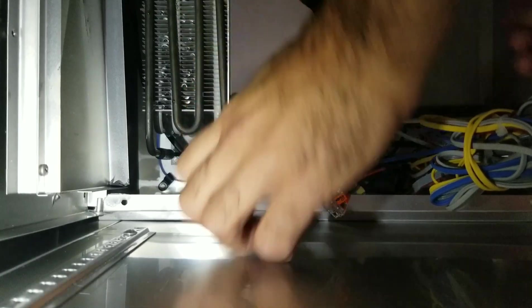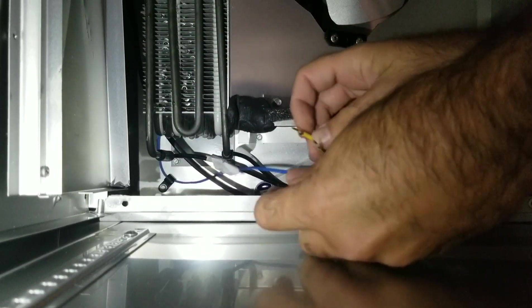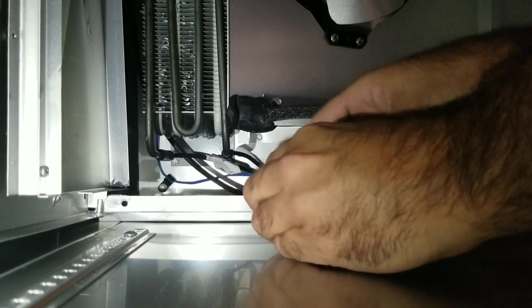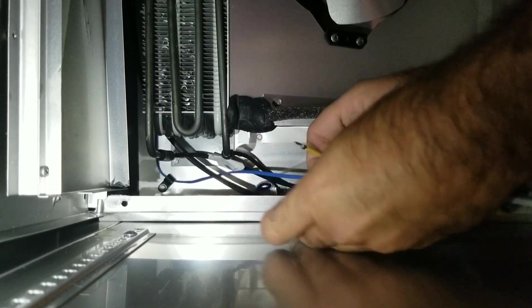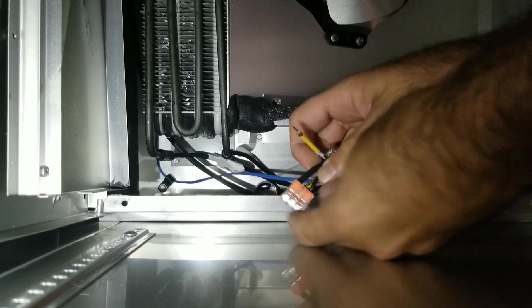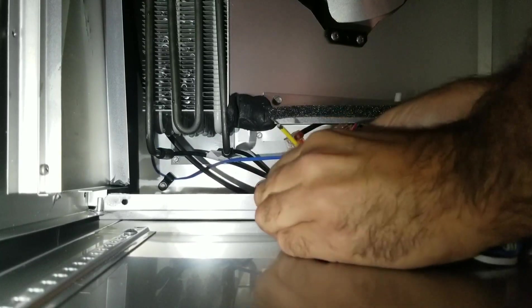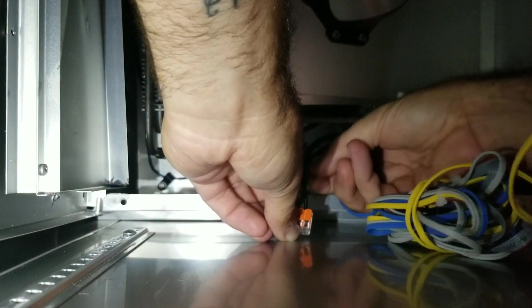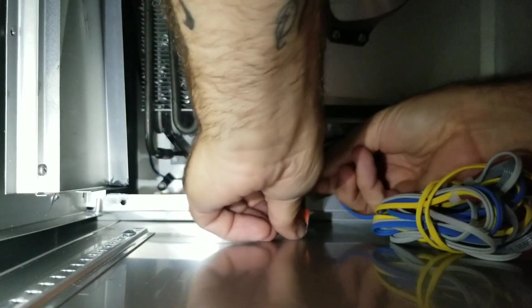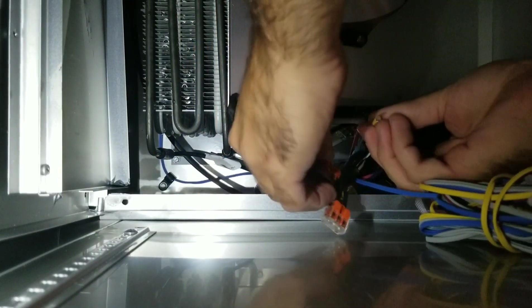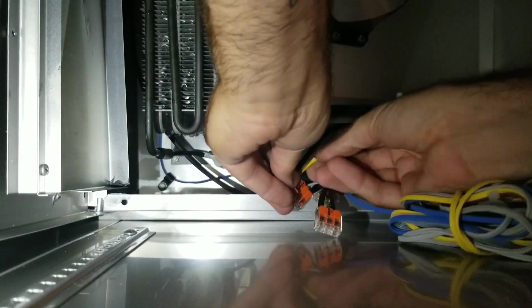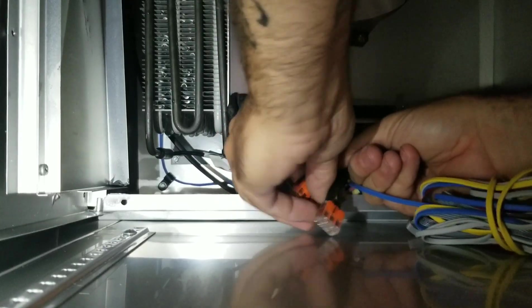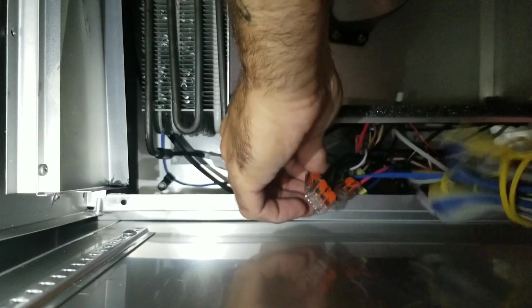So, there's these little cool connectors. We just push the wire in, get it in there all the way. We close the orange tab down, and then we try to yank that out, and it's real tight. So, these are really cool connectors. I've never seen these before, but I like them. I think they'd be better than Marrettes or Wire Nuts, as some of you guys call them.